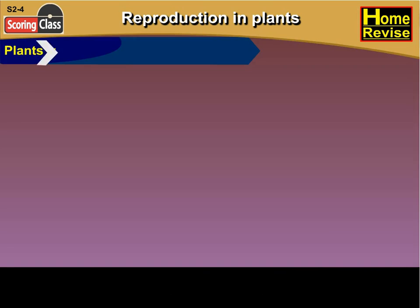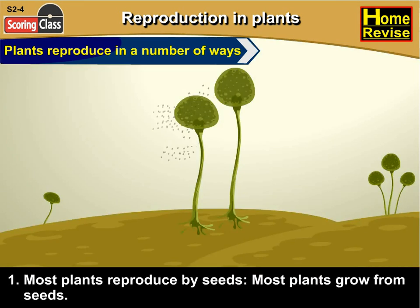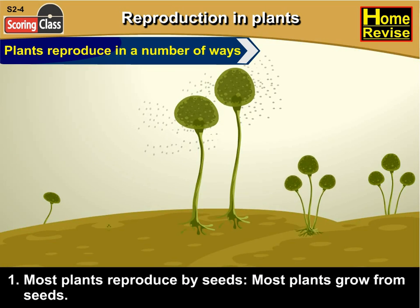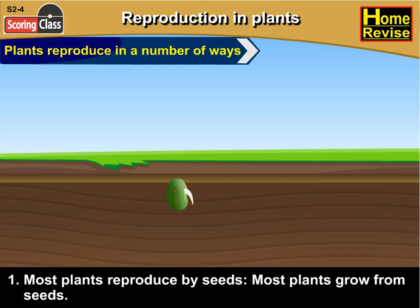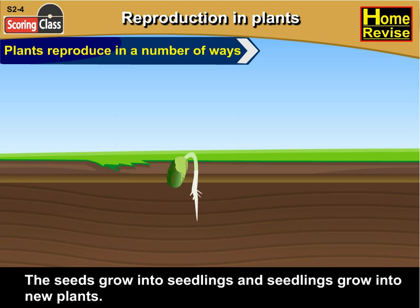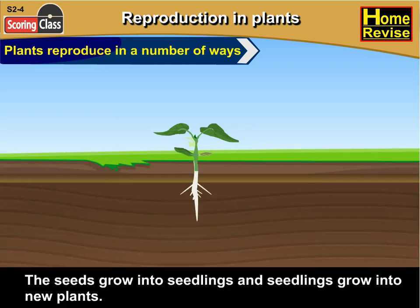Plants reproduce in a number of ways. First, most plants reproduce by seeds. That means that most plants grow from seeds. The seeds grow into seedlings and seedlings grow into new plants.